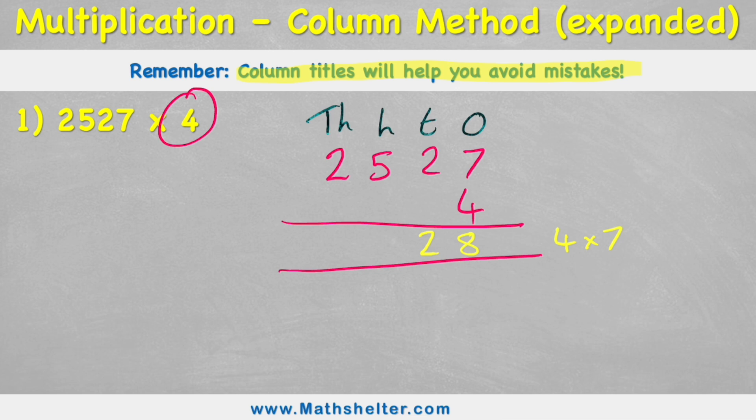Now what's my second question I need to answer? Well what we need to understand is that we're slowly breaking this question apart. I've done 4 times 7. So now I need to do 4 times 20. Because remember this 2, even though it looks like a 2, is in the 10s column. So it holds the value of a 20.